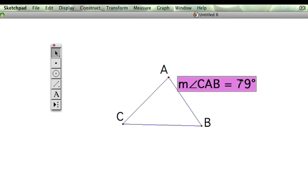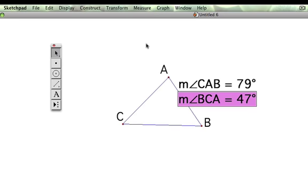So that means that this angle here is 79 degrees. So if we're going to measure this angle at point C, then we can either call it ACB, or we could call it BCA. And then we can click on measure and angle, and that angle is 47 degrees.